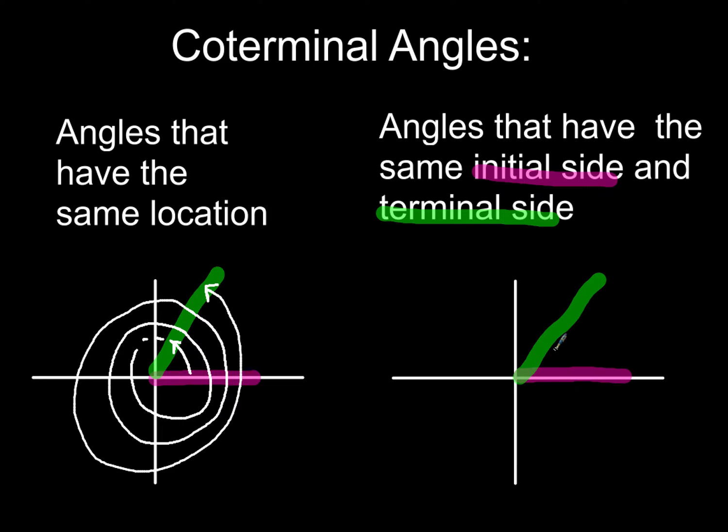But likewise, we could also move in a negative direction. So we could start here on our x-axis on the initial side and we could move around this way, stop there, or we could keep going. Or we could keep going and going further and further down the rabbit hole. All right, but you get the idea. So depending on the direction we move, we can end up at the same location, whether we move in a positive direction or in a negative direction.